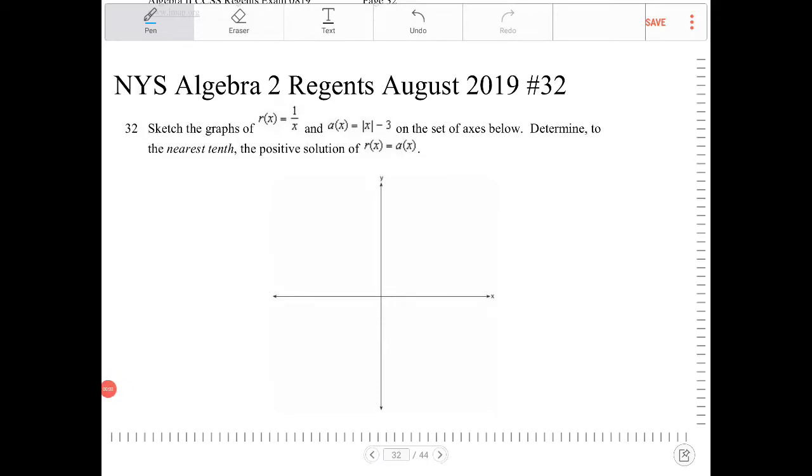Sketch the graphs of r(x) equals 1 over x and a(x) equals the absolute value of x minus 3 on a set of axes below. Determine to the nearest tenth the positive solution of r(x) equals a(x).